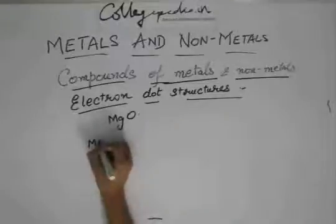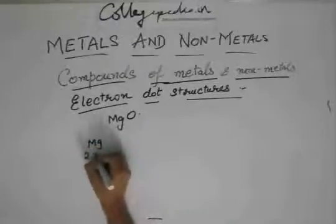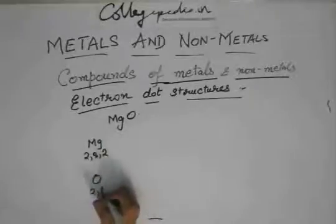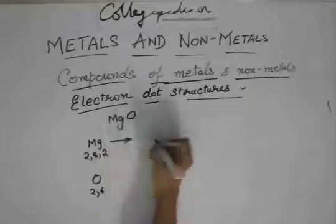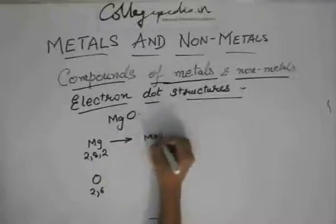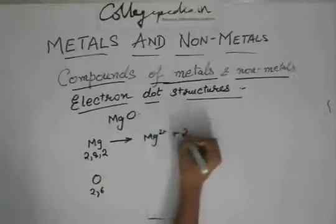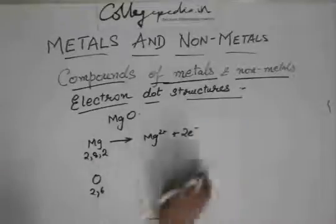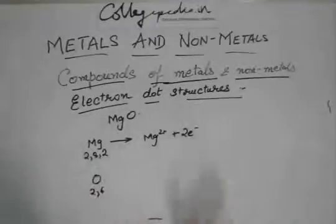Okay, so Mg has 12 electrons: 2,8,2. O has 6 electrons: 2,6. Mg will become Mg2+ and 2 electrons. O, now O needs 2 electrons, Mg has 2 electrons, Mg has given 2 electrons.